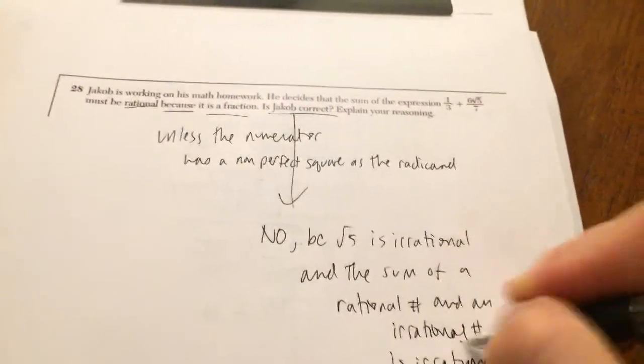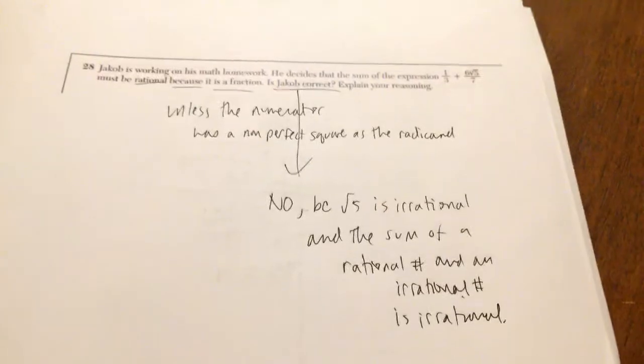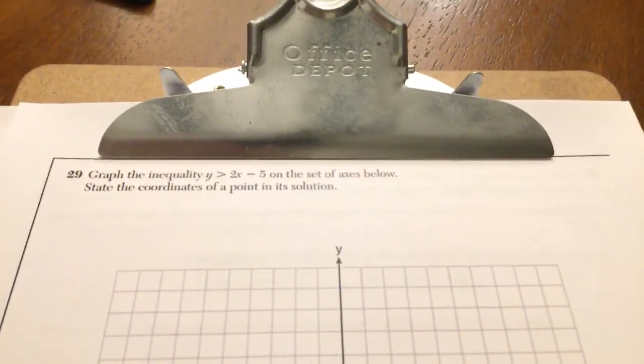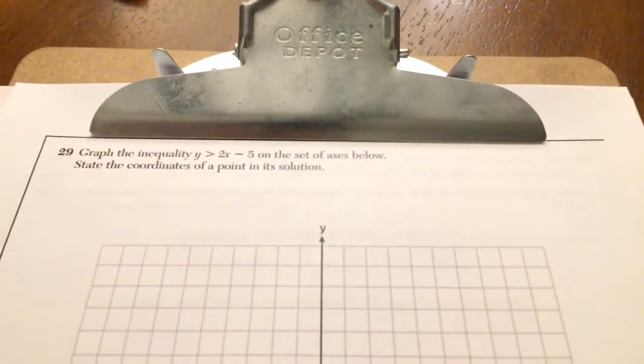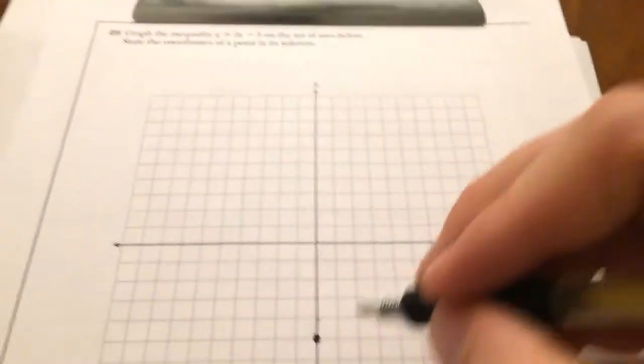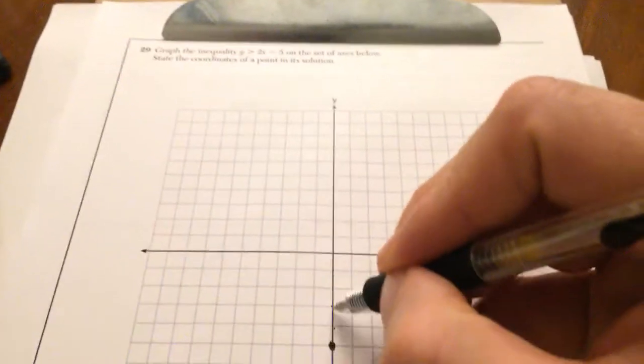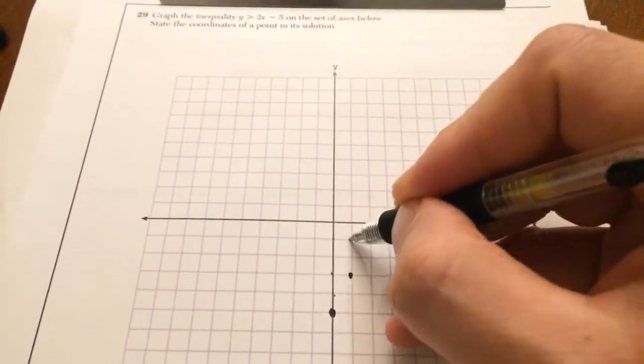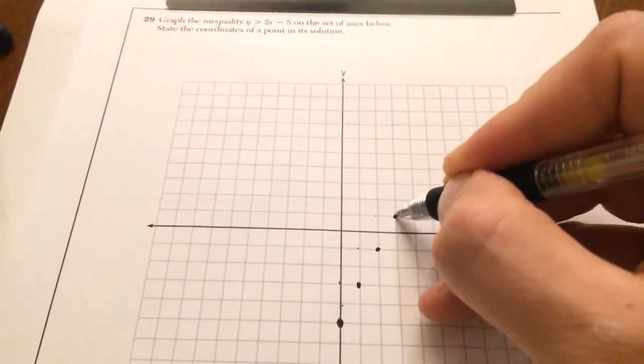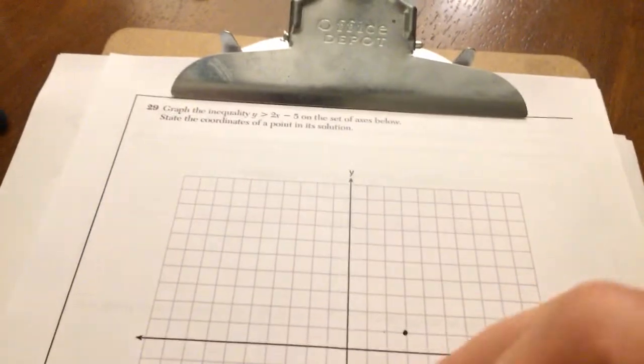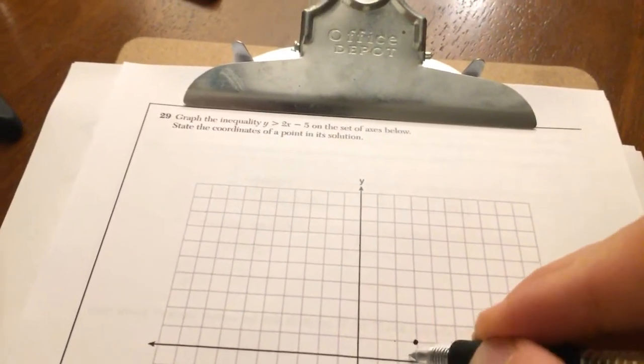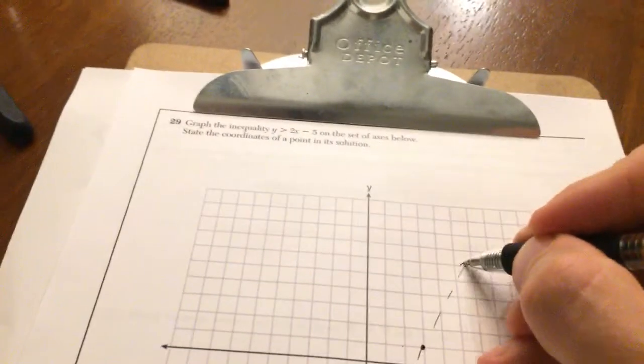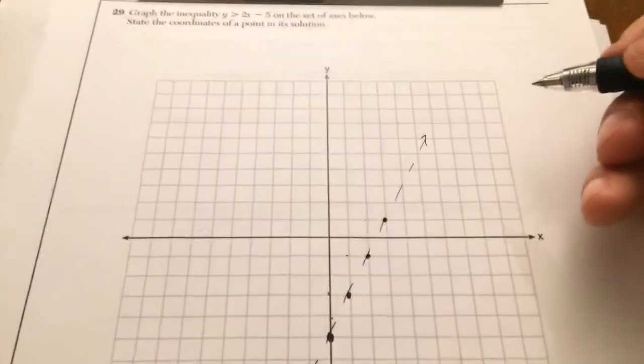So, graph the inequality Y is greater than 2x minus 5 on the set of axes below. My y-intercept is negative 5. My slope is 2, so I go up 2 over 1, up 2 over 1, up 2 over 1. And because of this symbol, I'm going to use a dashed line. So, just kind of sketching, pardon me for not having a ruler. This is my inequality boundary line.